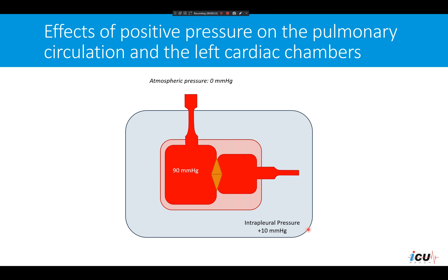We are assuming that during a mechanical breath, the intrapleural or intrathoracic pressure goes up to 10 mmHg. During this breath, that pressure will be squeezing on the pulmonary veins and will lead to increased venous return. This happens in early inspiration, and later the venous return will go down as a result of decreased stroke volume of the right ventricle during inspiration.